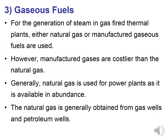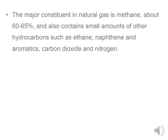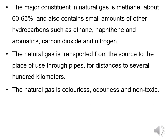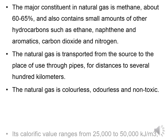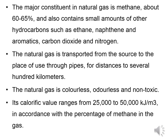Gaseous fuels are either natural gas or manufactured gases. Manufactured gases are costlier than natural gas. Natural gases are used for power plants where available in abundance. The major constituent is 60 to 65 percent methane, with small quantities of other gases. Natural gas can be transported through pipelines over several hundred kilometers. It is colorless, odorless, and non-toxic, with a calorific value ranging from 25 to 50 kilojoules per meter cube.